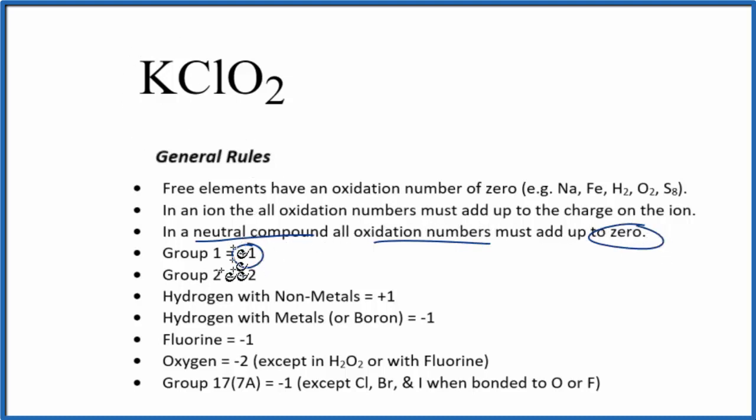Potassium here is in group one on the periodic table, so it'll have a plus one oxidation number. Oxygen is always going to be minus two, with a few exceptions. So each of these oxygens, minus two is the oxidation number.